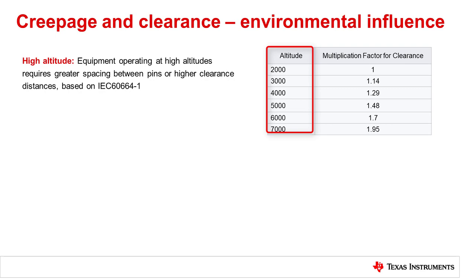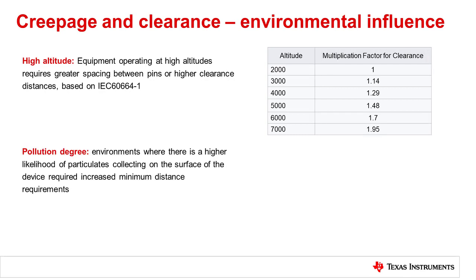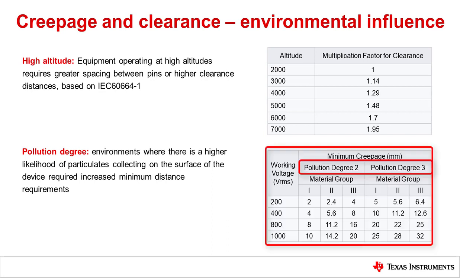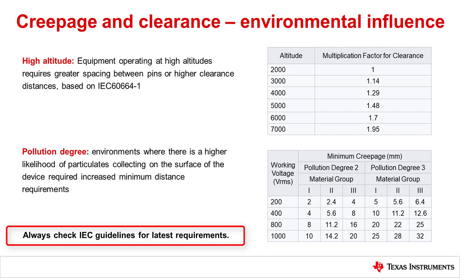Equipment operating at high altitudes requires greater spacing between pins or higher clearance distances based on IEC 60664-1, which provides multiplication factors by which clearance must be increased at higher altitudes in order to protect from altitude-induced arcing. Similarly, in operating environments where there is a higher likelihood of particulates collecting on the surface of the device and thereby creating conductive pathways, the consideration of pollution degree will also influence minimum distance requirements. Both altitude and pollution levels are rated for the end equipment operating environment from the end equipment standards, so it's wise to always check IEC guidelines for the latest standard.